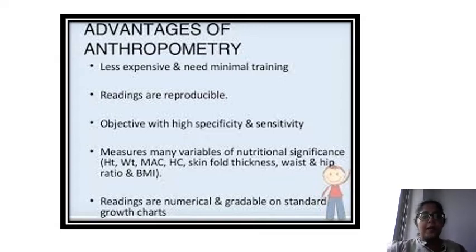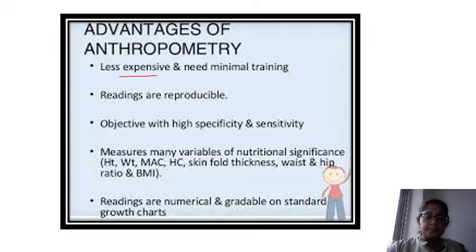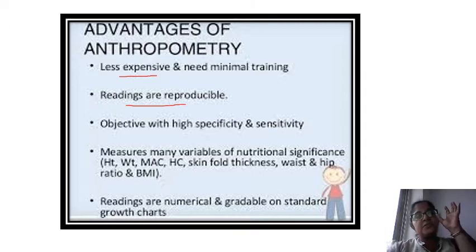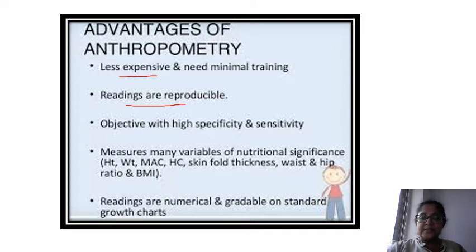First of all, anthropometry is very less expensive. Minimal things are required and minimal training is required to do the anthropometric measurements. These readings are reproducible — that means you can find the readings and work accordingly. The objective is of high specificity and sensitivity.